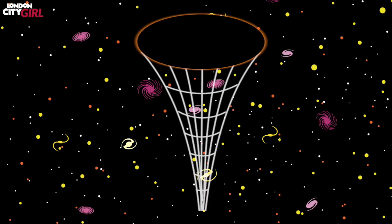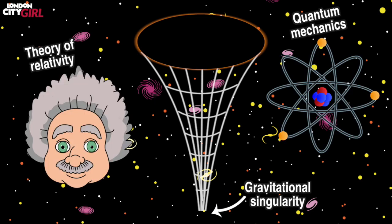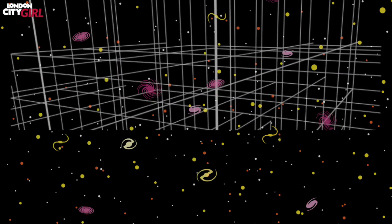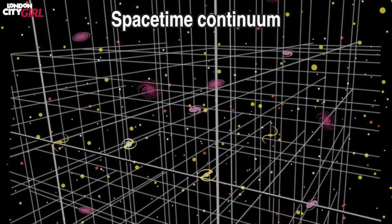This point is called a gravitational singularity, and the mathematics we use to explain the physical world around us, namely Einstein's theory of relativity and quantum mechanics, both break down at this point, and so we do not know what happens at the singularity. General relativity describes a space-time continuum as the fabric of the cosmos.